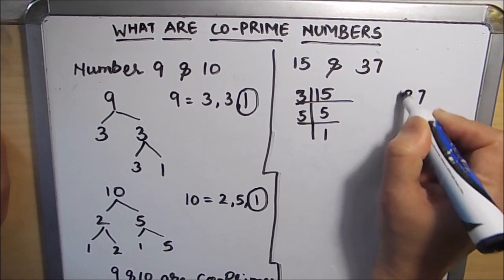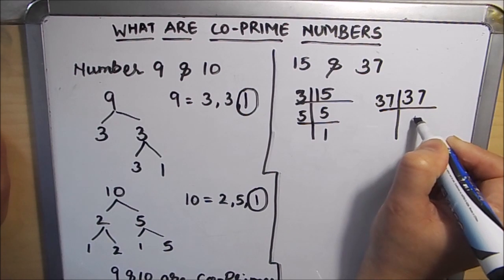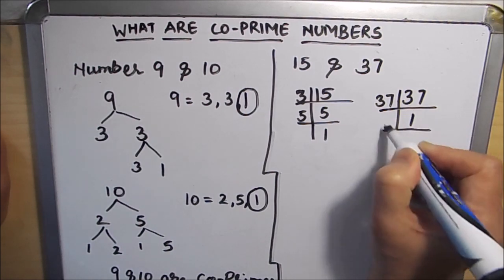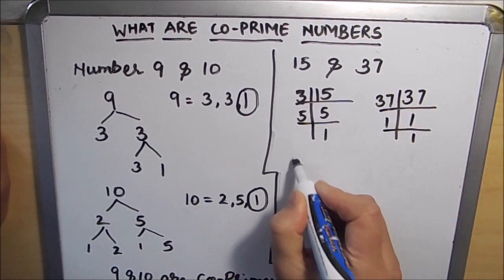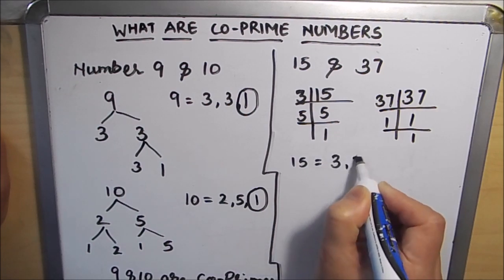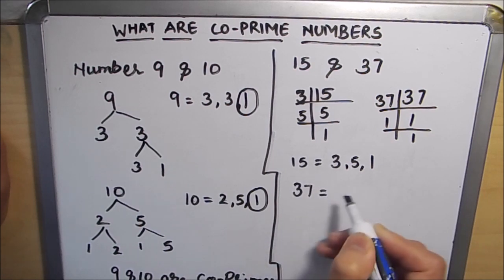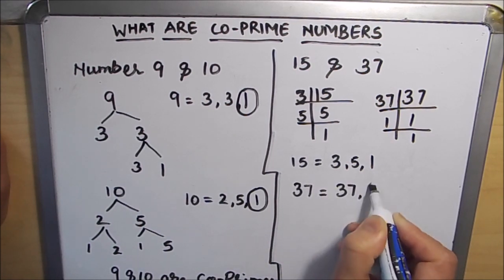And then we will find the factors of 37 which is 37 times 1. So the factors of 15 are 3, 5, and 1.